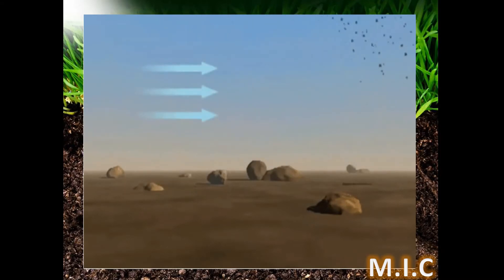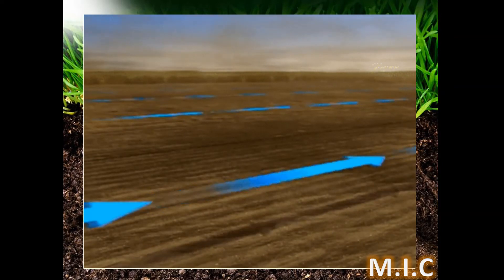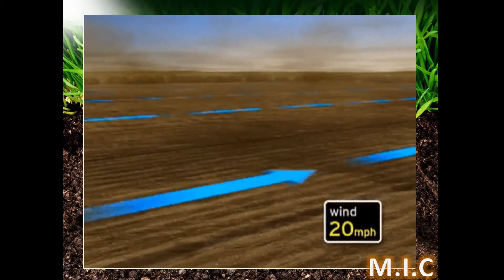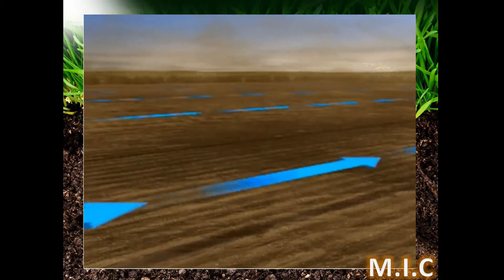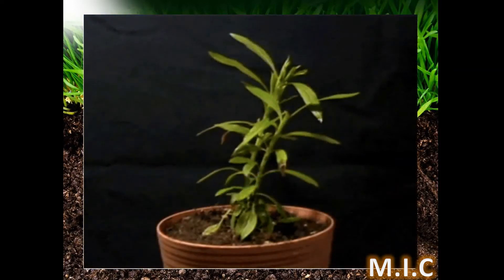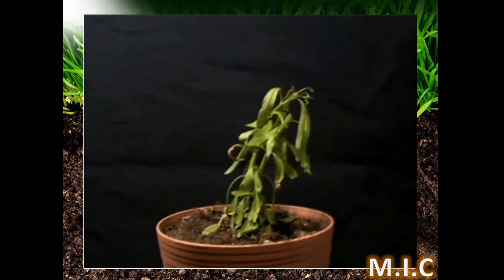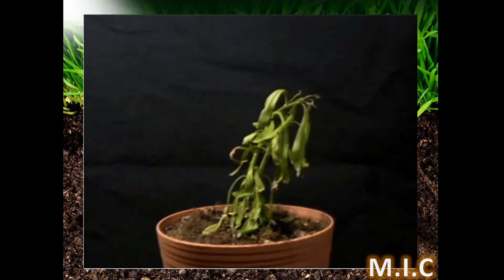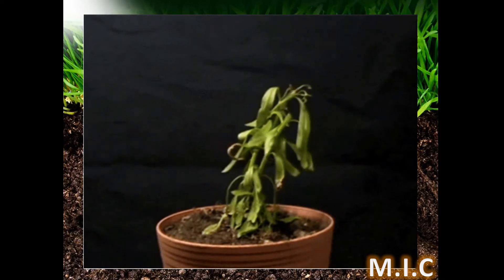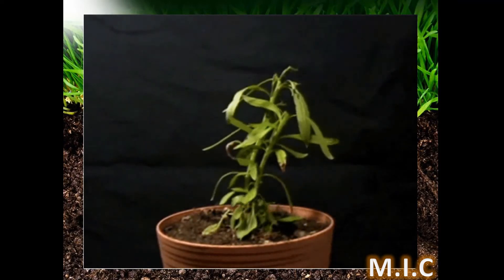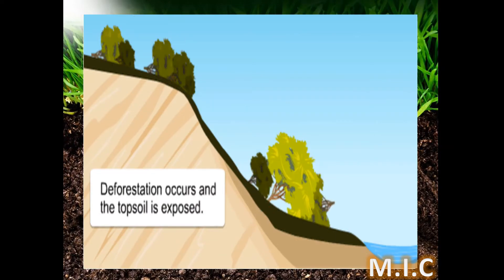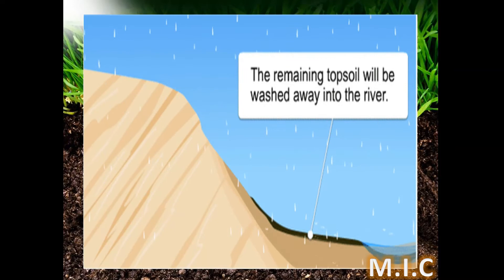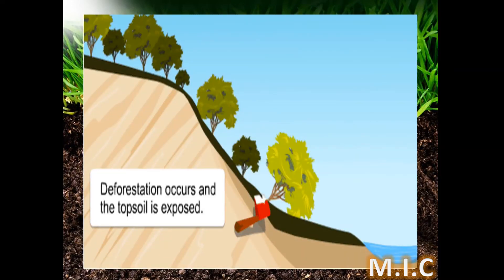The soil gets removed from the earth's surface. The wearing away of soil by wind and water is called soil erosion. With the soil, the manure also gets blown away, so the plants and trees also die.